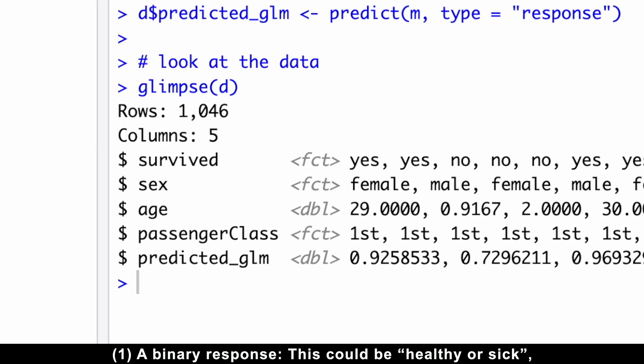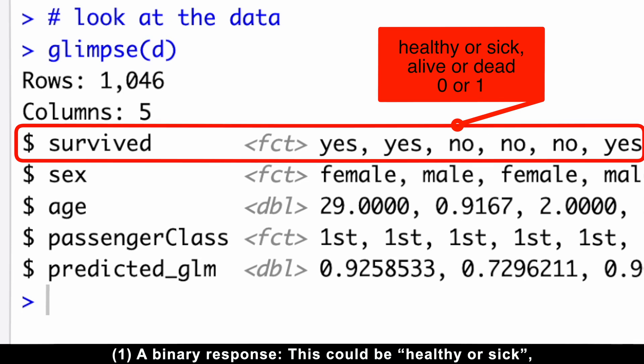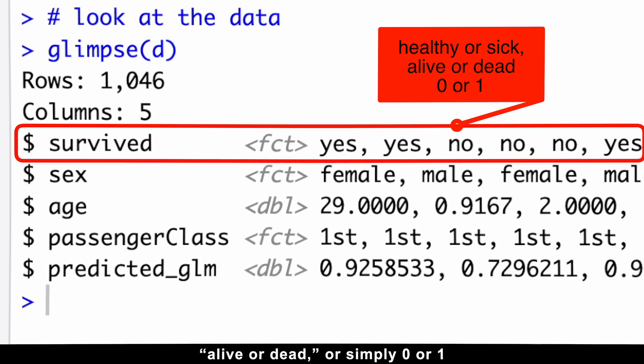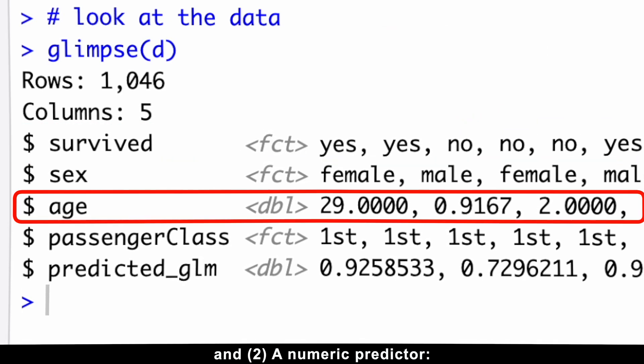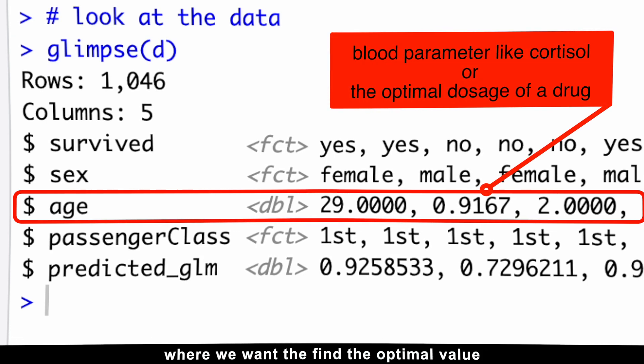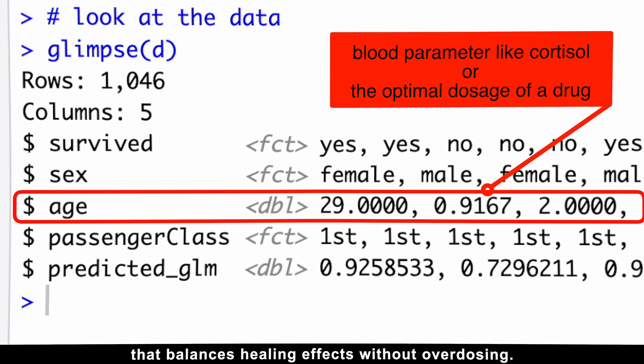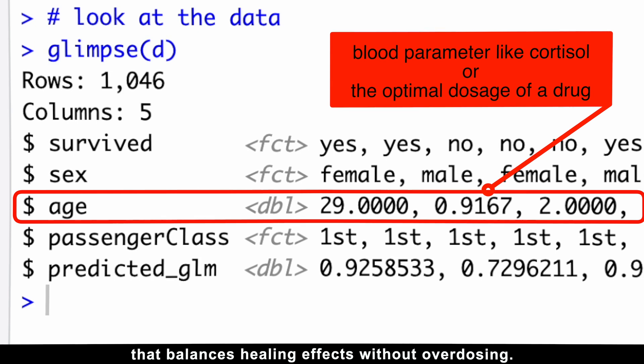A binary response—this could be healthy or sick, alive or dead, or simply zero or one. And a numeric predictor—this might be a blood parameter like cortisol, where we want to find the optimal value to classify patients as sick or healthy, or the optimal dosage of drug that balances healing effects without overdosing.